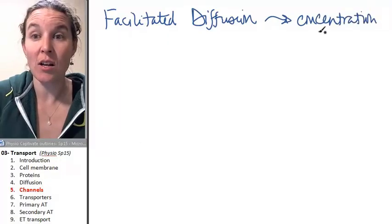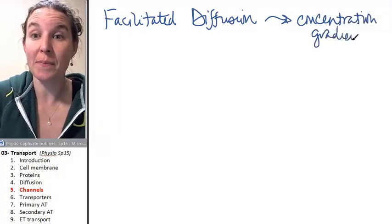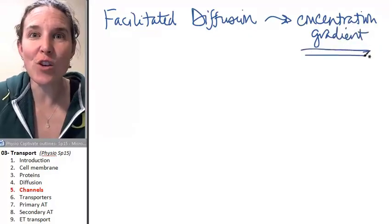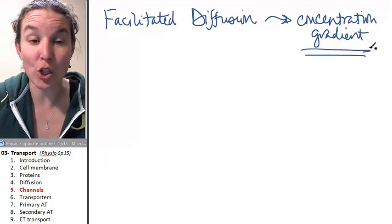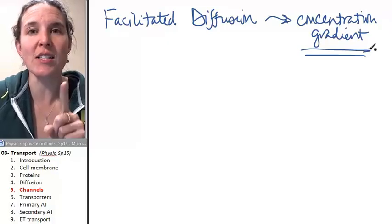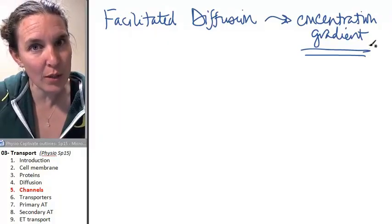If you have a concentration gradient, you can make molecules move, assuming they can pass through the cell membrane.